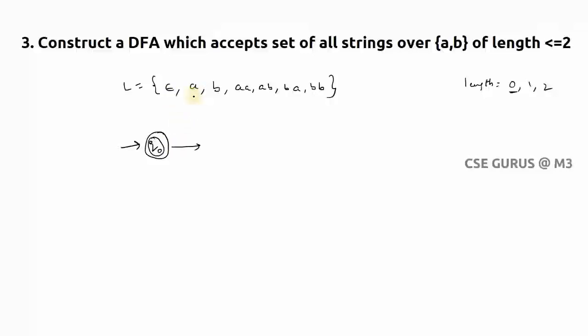That means I'll take like this: a,b where q1. Now you can see if it goes to q1, it has to accept either a or b. So that's why q1 also will become a final state. Now it has to accept two-length strings.